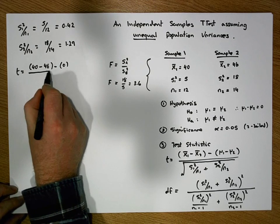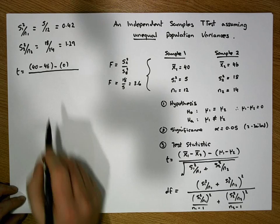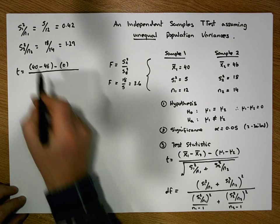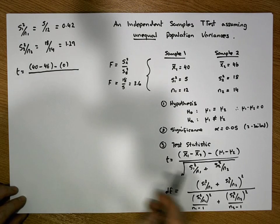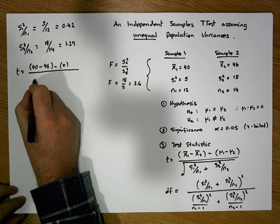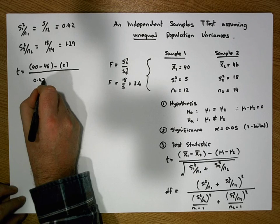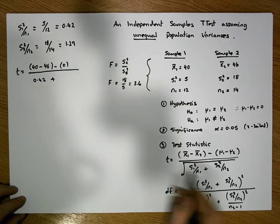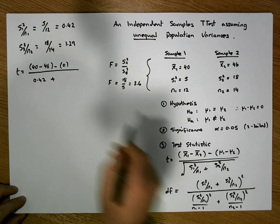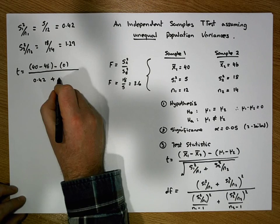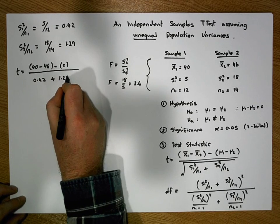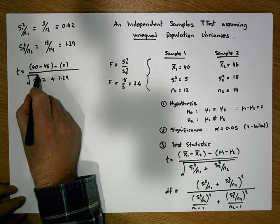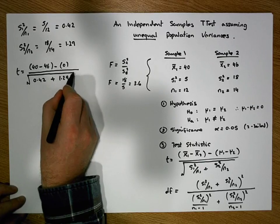That needs to be divided by the square root of our two ratios: the first ratio we calculated is 0.42, plus our second ratio that we calculated, 1.29, and it's the square root of this particular value.